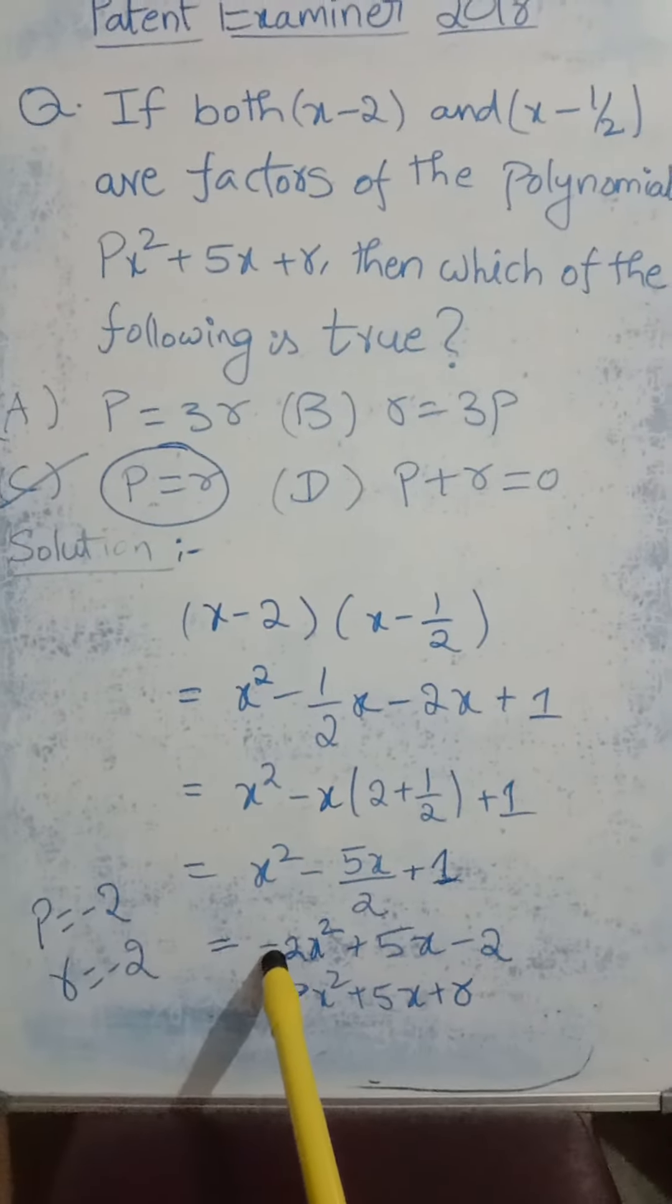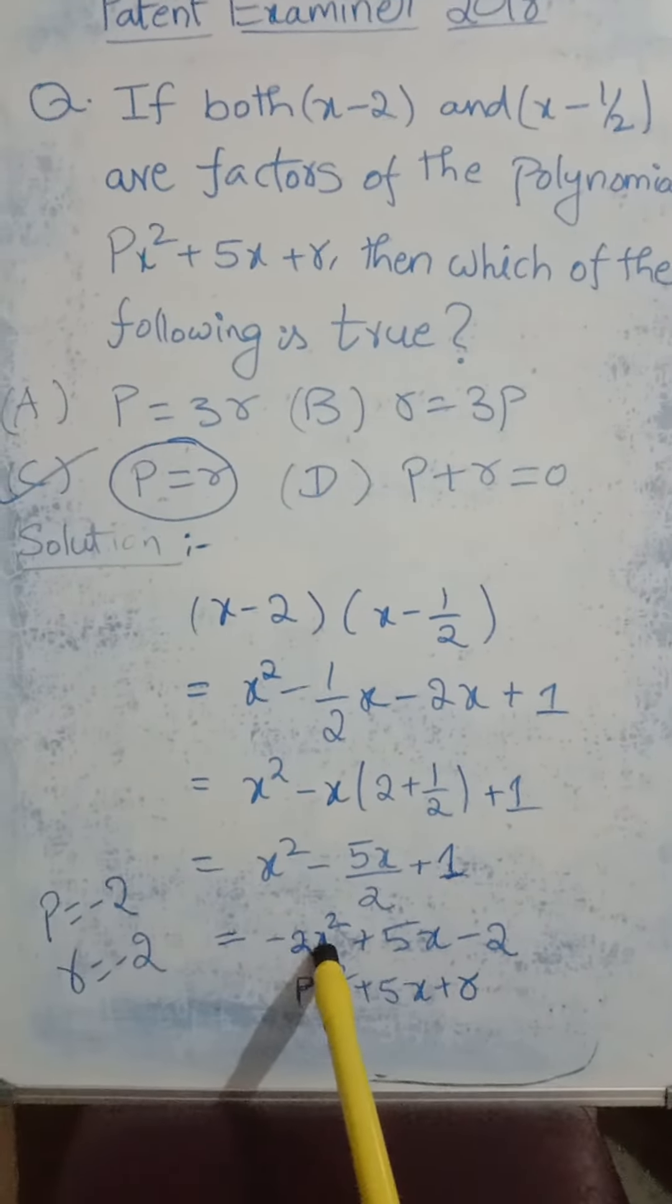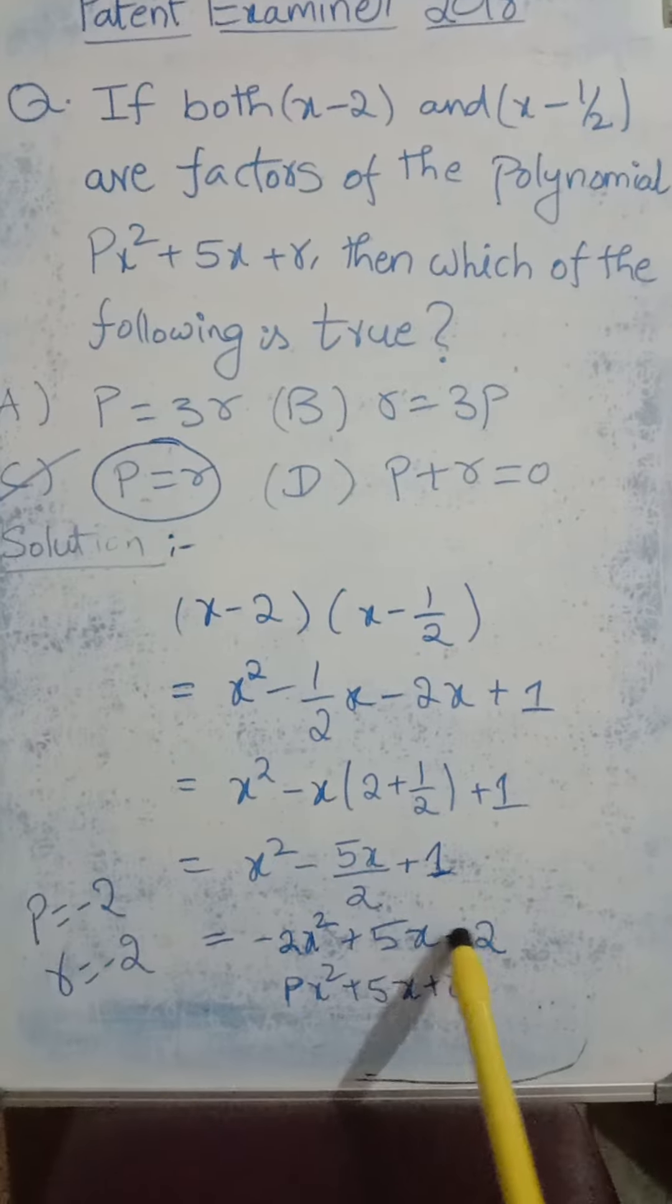Once I do that, I am getting the quadratic equation as minus 2x square plus 5x minus 2.